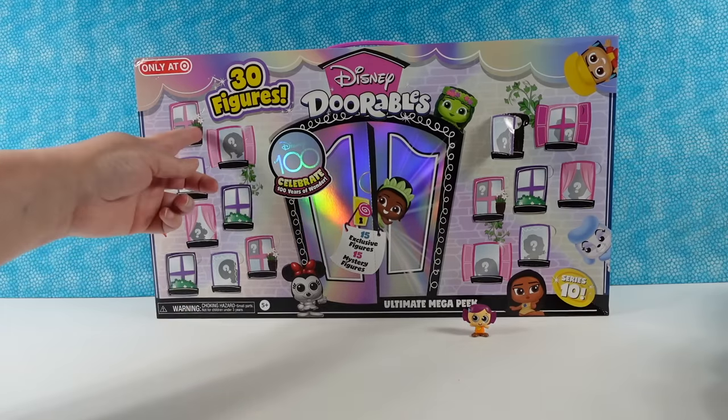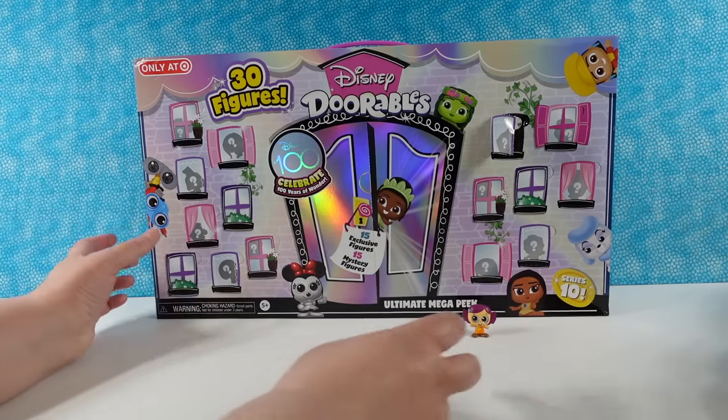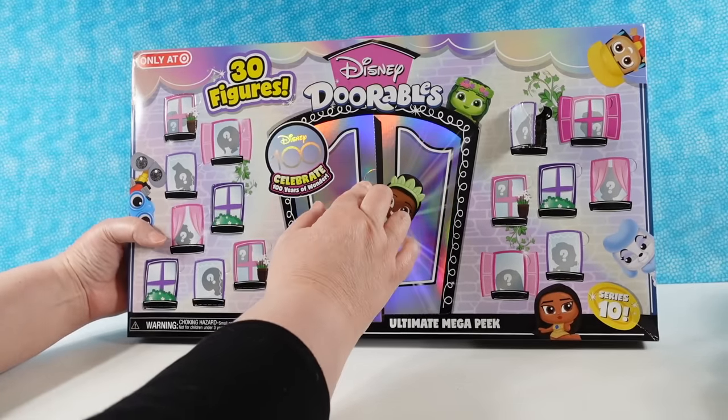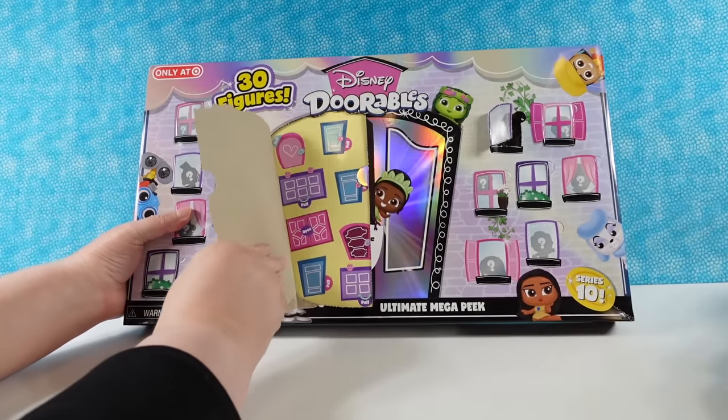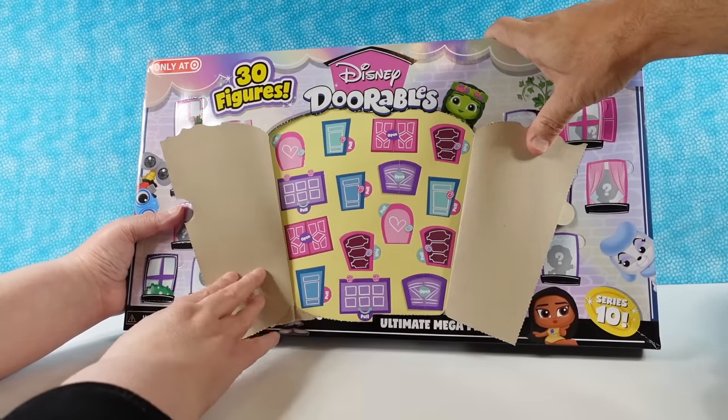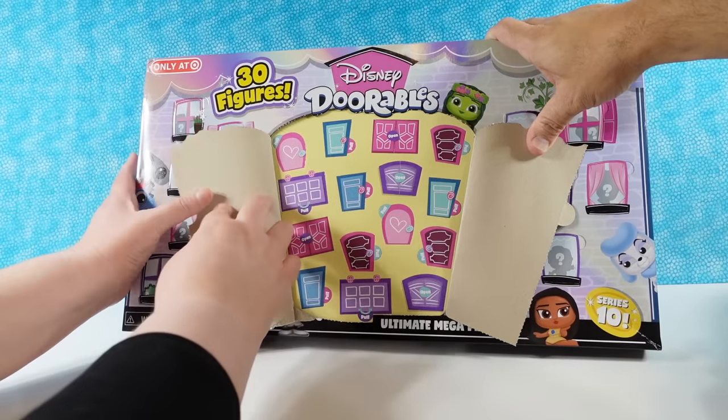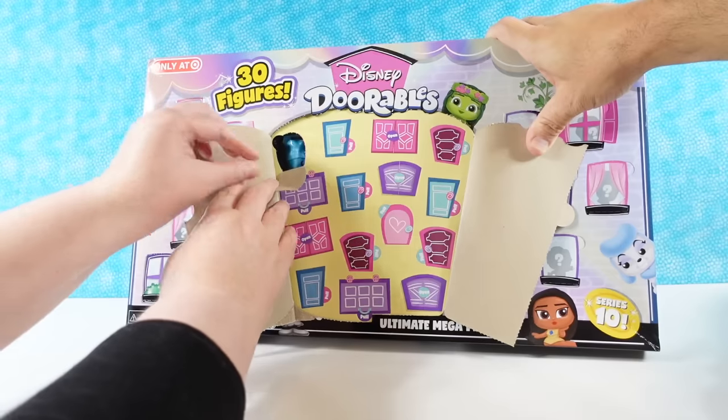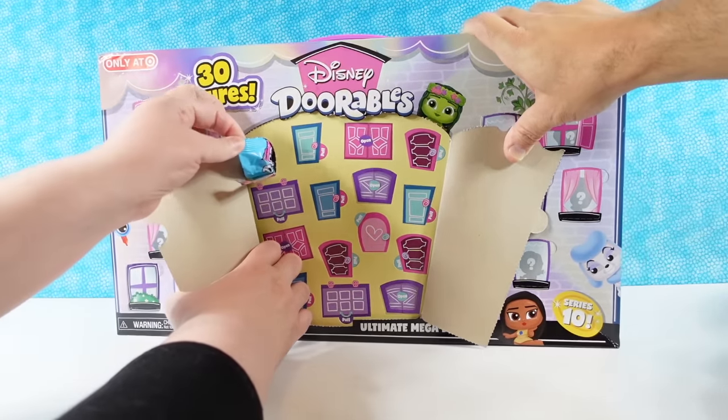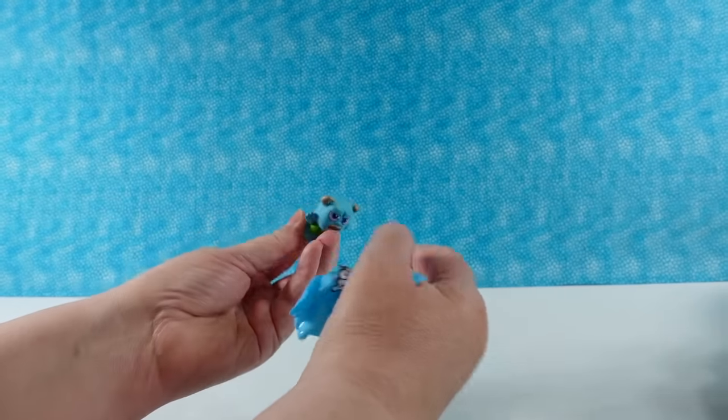So I'm thinking all these might be the exclusives. Oh, well then let's open up the big door. You want to open up the big door first? The big door first, yeah. But unless we look at the back, we're not going to know if they're exclusives. Let's set her off to the side. Okay. And we'll show all the figures again at the end.